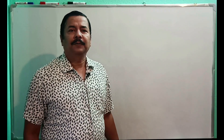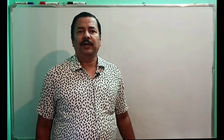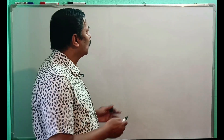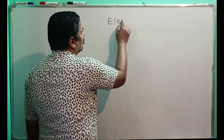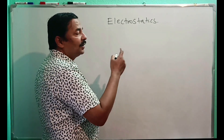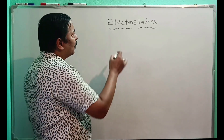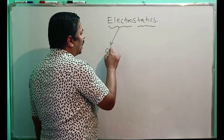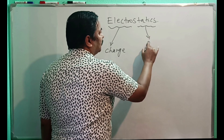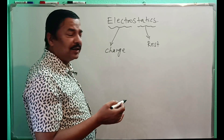Hello students, welcome to the class. We will start today with electrostatics — the capacitor is already covered in a previous video. In the discussion of electrostatics, it contains two parts: first is 'electro' and second is 'statics'. The electro portion gives you the idea of charge, and statics is the science of rest. Therefore, the study of charge at rest is called electrostatics.